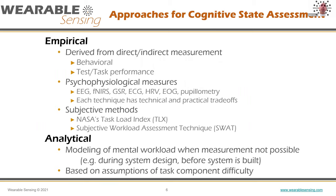On the analytical side, we create a model that assesses what the person is doing based on a set of assumptions. For example, while driving, we can do a task decomposition: driving a straight line means low workload, but at a busy intersection with pedestrians and signs, you might be at a higher workload. You can model any task breakdown, run it in computer simulations, and see the task load of a person at a particular time. People usually use as many methods as possible, since none is perfect, and build a story from the aggregation of data and analysis methods.